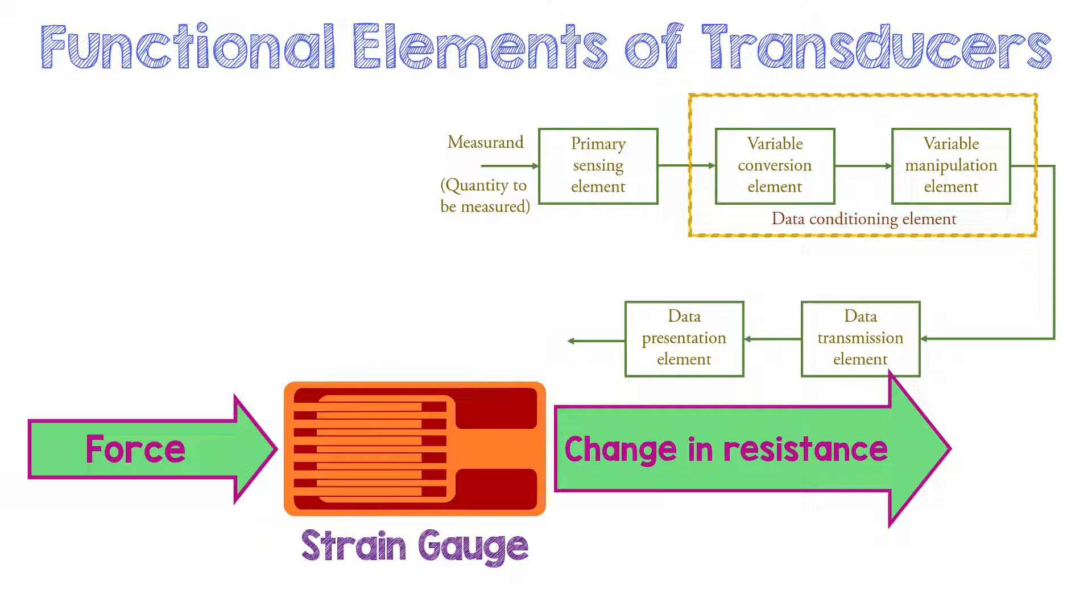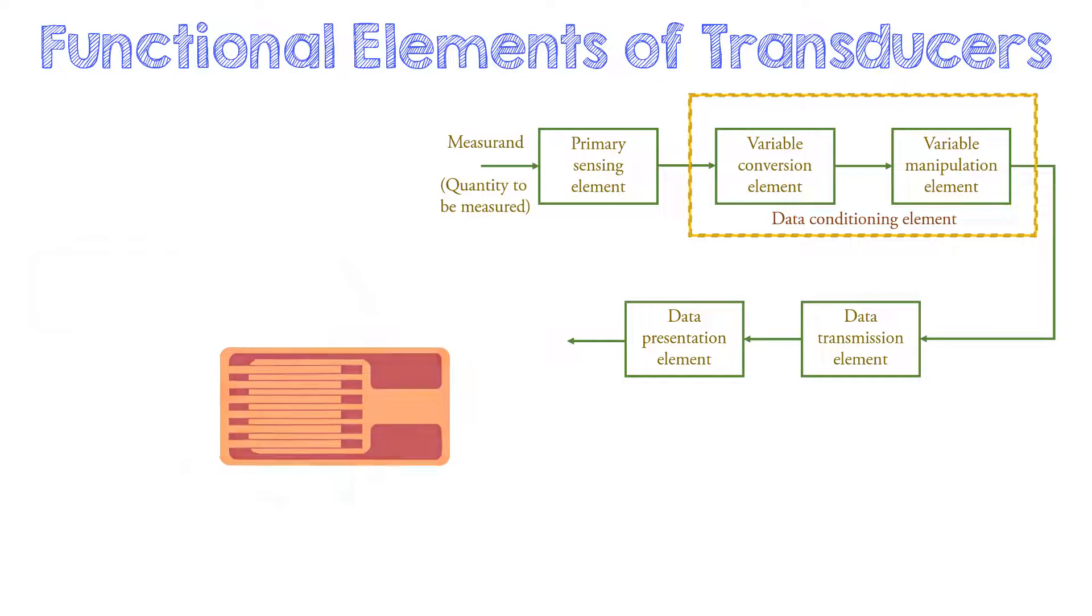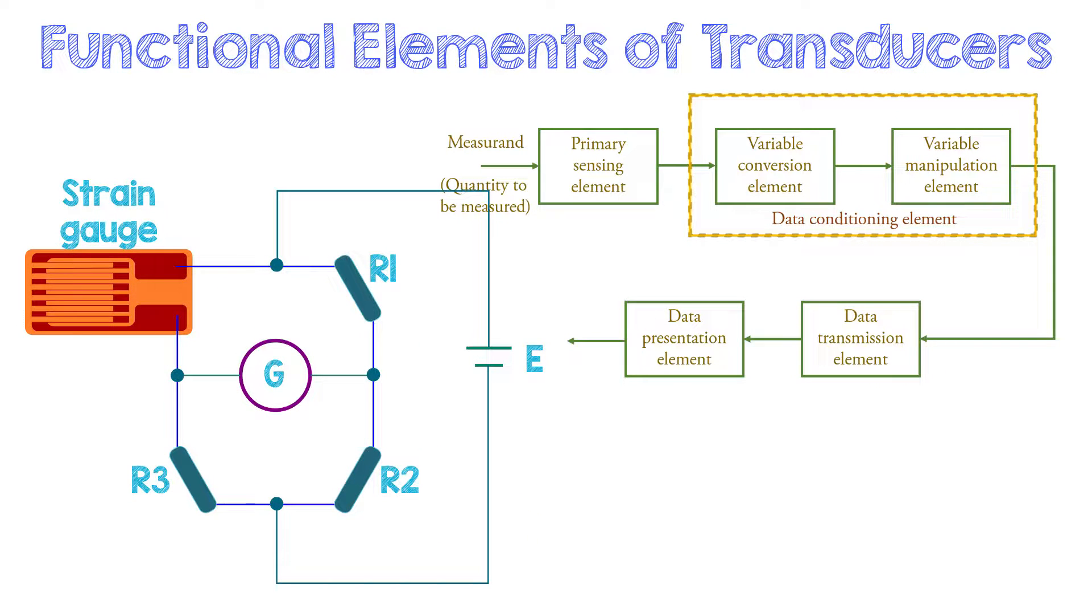However, this change in resistance cannot be used directly to know the value of the force applied. The change in resistance needs to be converted into an electrical quantity to be easily measured. For this, a Wheatstone bridge is employed. By connecting the strain gauge to one of the arms of Wheatstone bridge, one can convert the change in resistance to voltage. The Wheatstone bridge is an example of variable conversion element.